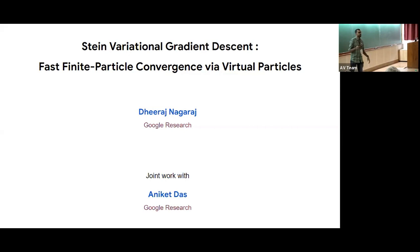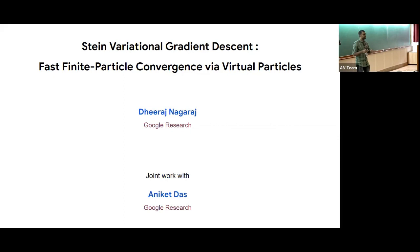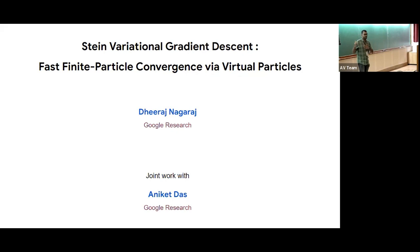We had a nice lecture by Lenaik in the morning about particle methods to optimize functionals of probability distributions, with the main application being training neural networks. Now I'll be talking about particle methods to do sampling—specifically, the algorithm called Stein variational gradient descent, which has become important in the last few years and has been studied a lot. This is joint work with Aniket Das, who is a pre-doc at Google.